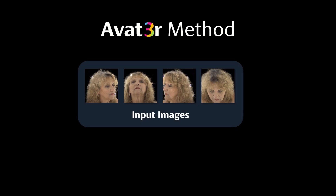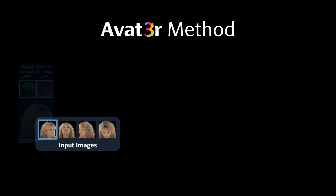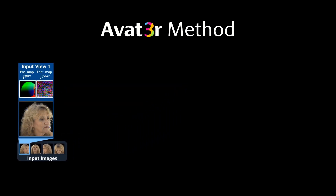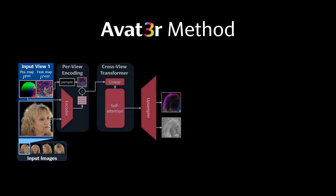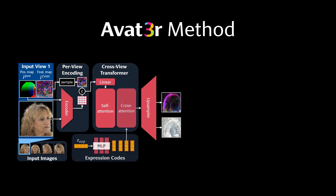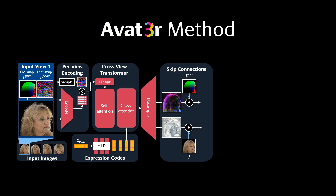At a high level, Avatar takes four posed images of a person as input and predicts one 3D Gaussian for every pixel. For each input view, we leverage position maps from Duster and feature maps from Sapiens. These inputs are processed in a vision transformer backend to infer a 3D structure. Facial motion is modeled with cross-attention to a sequenced expression code.